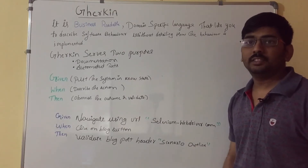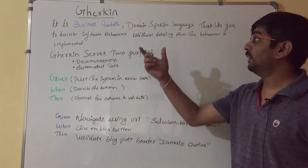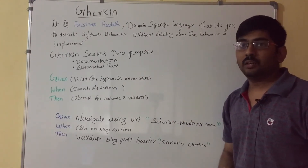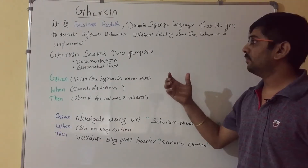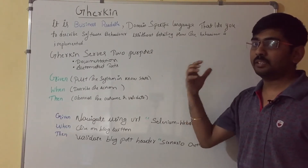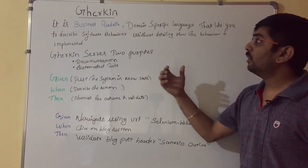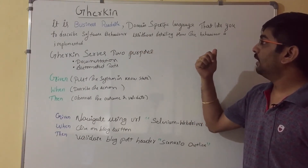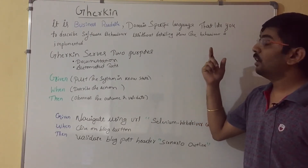Hi guys, this is Abhishek. In this video I am going to show you what exactly Gherkin means. In my previous video I covered how to write user stories and acceptance criteria. Now I'm going to show how to write acceptance criteria using Gherkin. Gherkin is a business readable and domain specific language that lets you describe software behavior without detailing how the behavior is implemented.